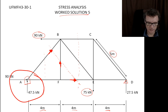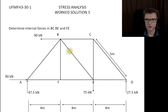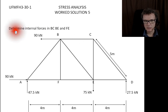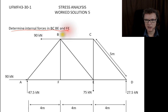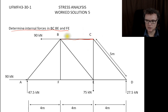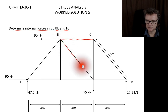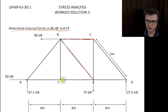Going back to the course notes, for our particular problem we're looking to make a cut through BC (that member there), through BE (that member there), and finally through FE or EF (that member there).